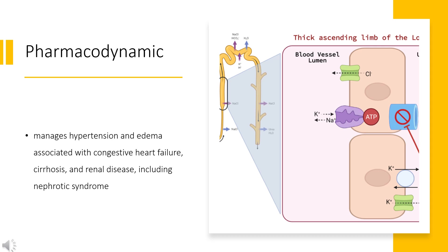Protein-bound furosemide is delivered to its site of action in the kidneys via active secretion by nonspecific organic transporters expressed at the luminal site of action. Following oral administration, the onset of the diuretic effect is about 1 to 1.5 hours, and the peak effect is reached within the first 2 hours. The duration of effect following oral administration is about 4 to 6 hours, but may last up to 8 hours. Following intravenous administration, the onset of effect is within 5 minutes, and the peak effect is reached within 30 minutes. The duration of action following intravenous administration is approximately 2 hours.